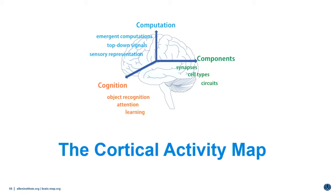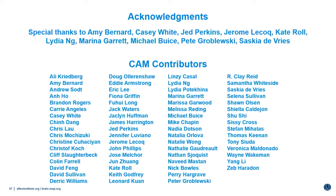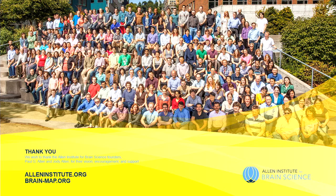To summarize, based on close collaboration among research, engineering, and technology teams, the Cortical Activity Map Project tries to address the question of how sensory information is represented in the mouse brain. We will gain insight into how stimulus, behavior, and state are represented by neural activities in mouse cortex in both single and populations of cells. We'd like to thank all our CAM contributors, our Allen Institute colleagues, and special thanks to our founders Paul Allen and Jody Allen for their vision, encouragement, and support.